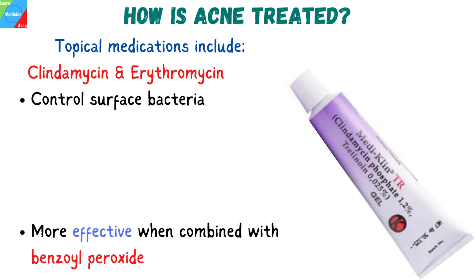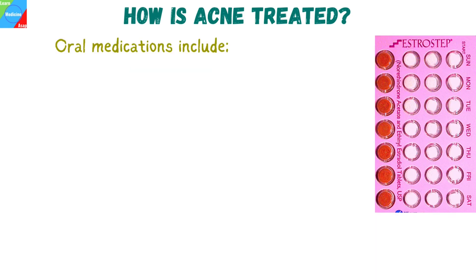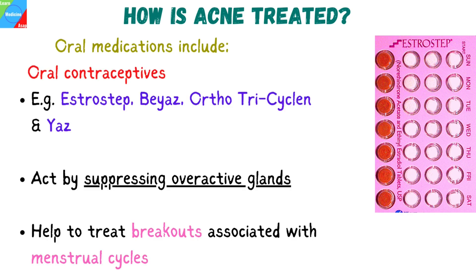Antibiotics such as clindamycin and erythromycin control surface bacteria that often encourage the inflammation of acne. These antibiotics are more effective when combined with benzoyl peroxide. There are other medications that can be taken orally, including oral contraceptives, which can help control acne in women by suppressing the overactive gland. They are commonly used as long-term acne treatments and help to treat breakouts associated with menstrual cycles. Examples include Estrostep, Beyaz, and Ortho Tri-Cyclen.